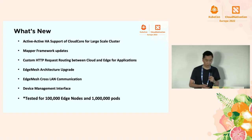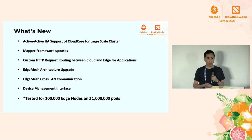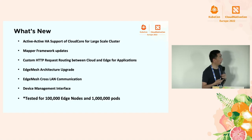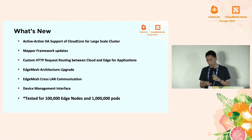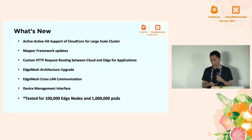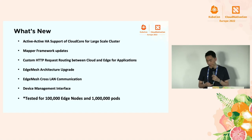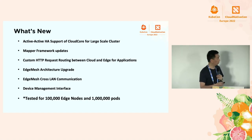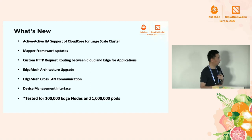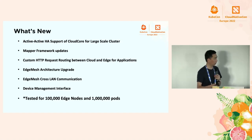From 2020 to 2021 we have a bunch of new features. First, active-active high-availability deployment for the edge core. We also have a new mapper framework for device connections, new HTTP request routing between cloud and edge, and EdgeMesh — our data plane — with a complete architecture upgrade and improved cross-LAN communication. We have a new device management interface from our IoT SIG. Most importantly, this year we tested 100,000 nodes and 1 million pods deployment — very impressive performance data.